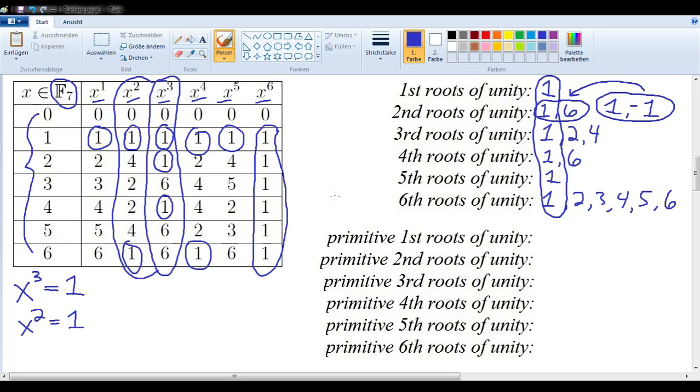And one other pattern is if we take a look at the q minus 1th roots of unity, which in this case was 6 since q is equal to 7, then we will always get all non-zero elements. Which means, in other words, that for all x in any field raised to the q minus 1st power, we will always get 1.